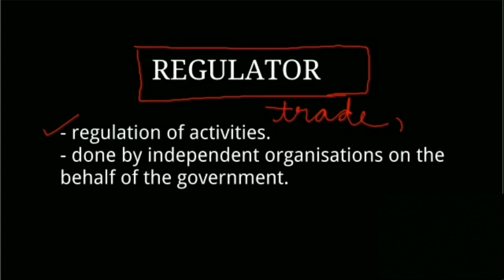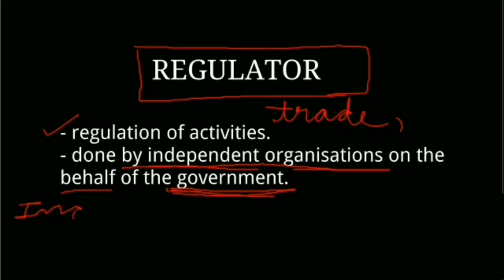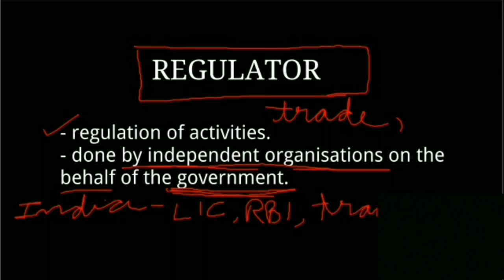Regulatory public policies are implemented by independent organizations that work on behalf of the government. For example, in India, we have the LIC, which is an independent organization working on behalf of the government, the RBI — Reserve Bank of India — and the state electricity corporations or state transport corporations. All these are independent organizations working on behalf of the government.